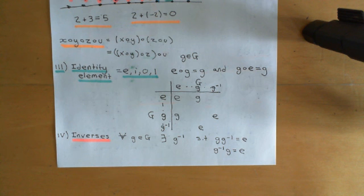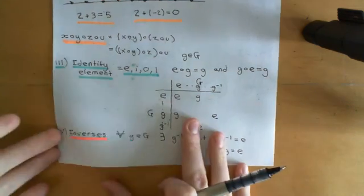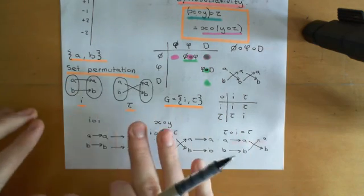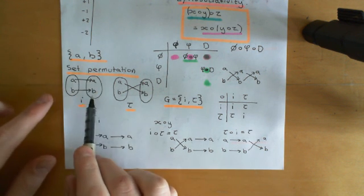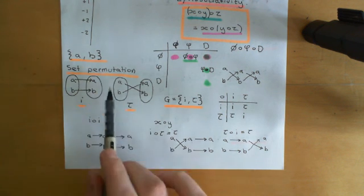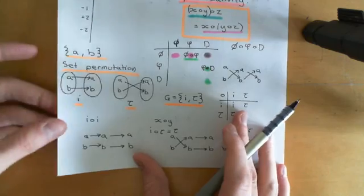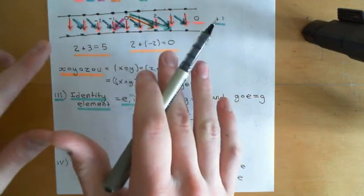With the example of the set with just two elements, a and b, where we take the two set permutations, inverses aren't a big thing. The identity map is its own inverse because it will compose with itself to give the identity map. The transposition map is also its own inverse because if you compose the transposition map with itself, again it gives you the identity map.